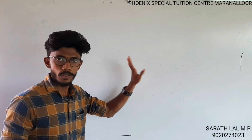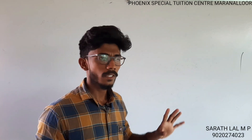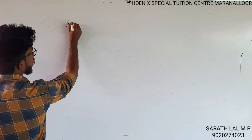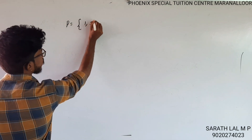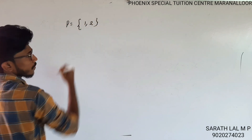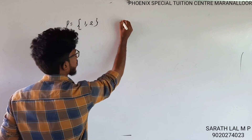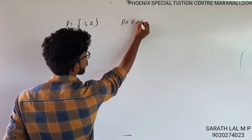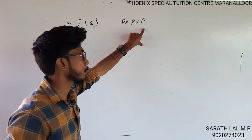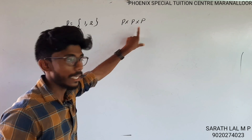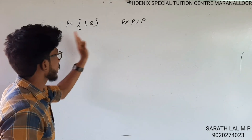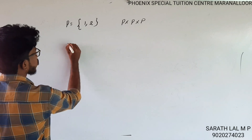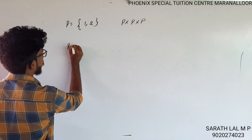The first question is: Let P equal to {1, 2}. If you want to do P cross P, then you can do P cross P cross P. If you want to split it, then P cross P.